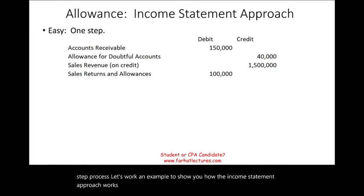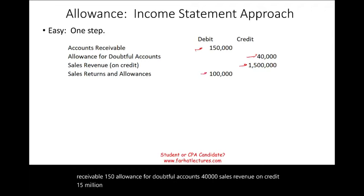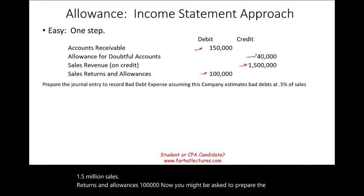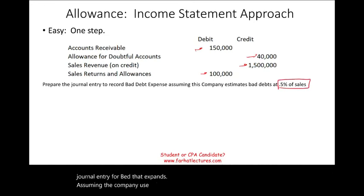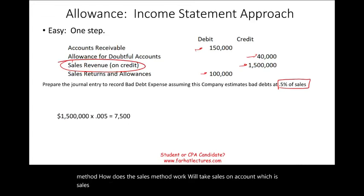Let's assume we are given this data: account receivable $150,000; allowance for doubtful accounts $40,000; sales revenue on credit $1.5 million; sales returns and allowances $100,000. You might be asked to prepare the journal entry for bad debt expense, assuming the company uses 0.5% of sales as their base. We take sales on credit multiplied by the rate 0.005, which gives us $7,500. We debit bad debt expense and credit allowance for doubtful accounts. This adjustment happens at the end of the period.